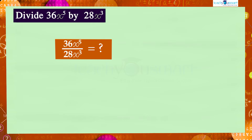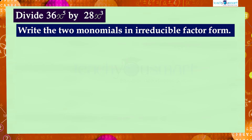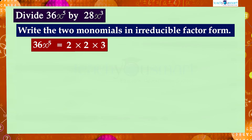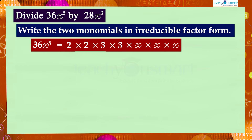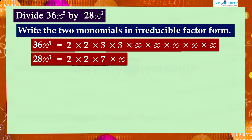For that, first we write these two monomials in irreducible factor form. That is, 36x⁵ equals 2 × 2 × 3 × 3 × 3 × x × x × x × x × x, and 28x³ equals 2 × 2 × 7 × x × x × x.